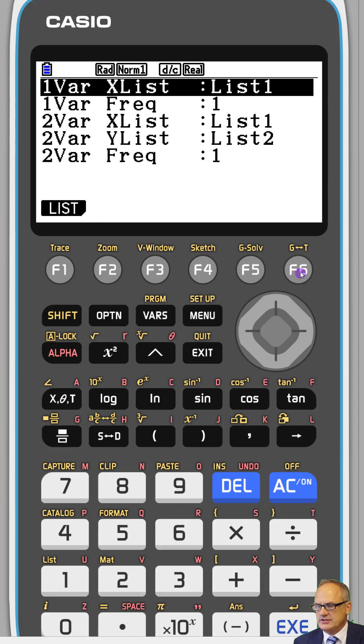Before you do this, check your settings. So look at the two variable. What we've got is list one is the X values, list two is the Y values. And we're saying we're going to have one of each pair.